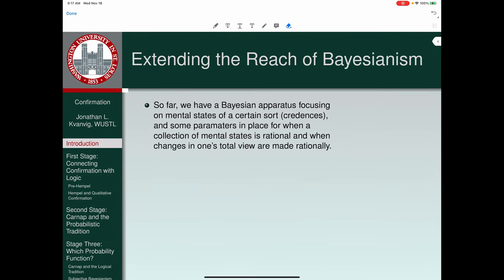So what have we been thinking about so far? We have a Bayesian apparatus focusing on mental states of a certain sort, call them credences, and some parameters in place for when a collection of mental states is rational and when changes in one's total view are made rationally.